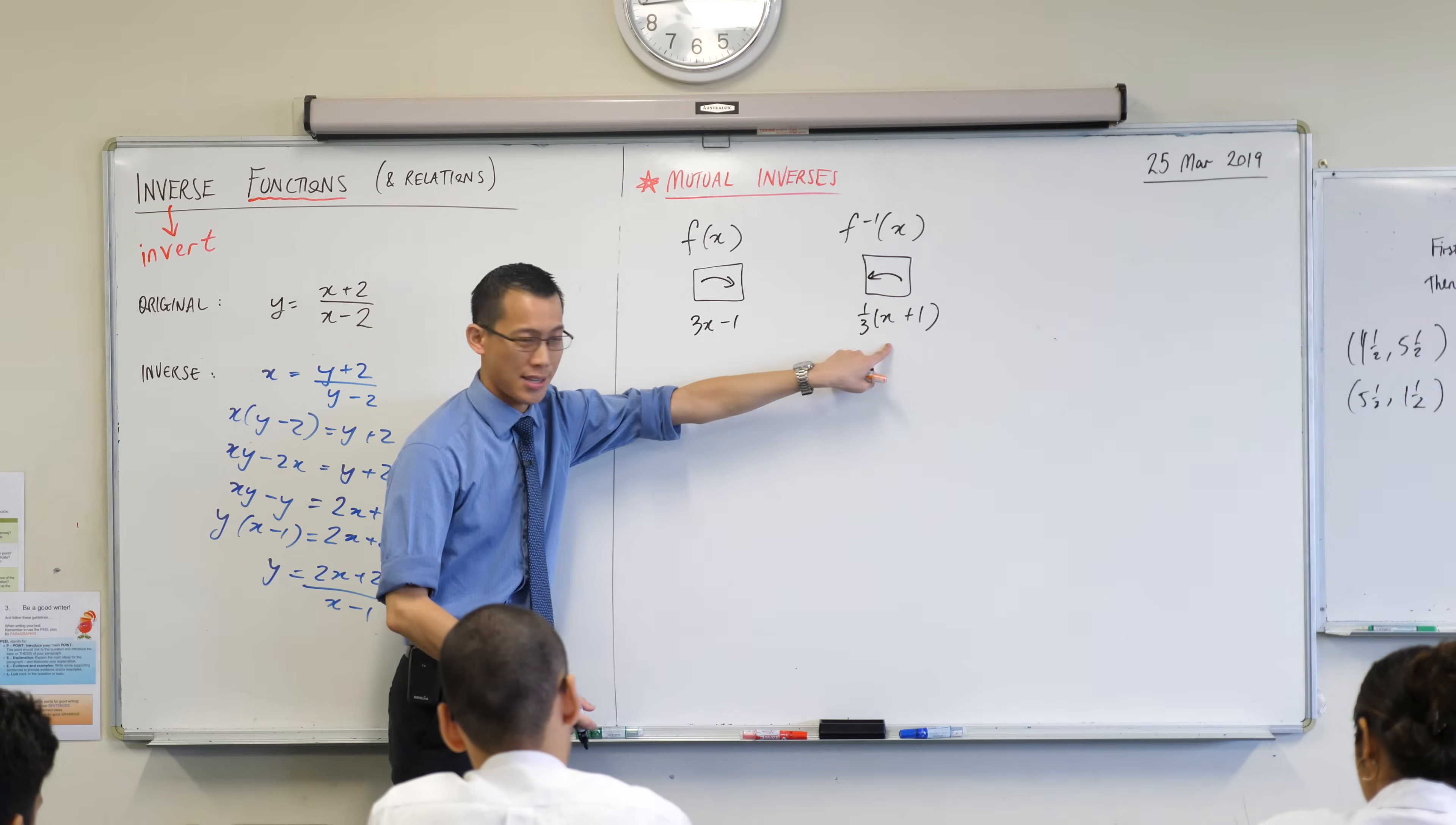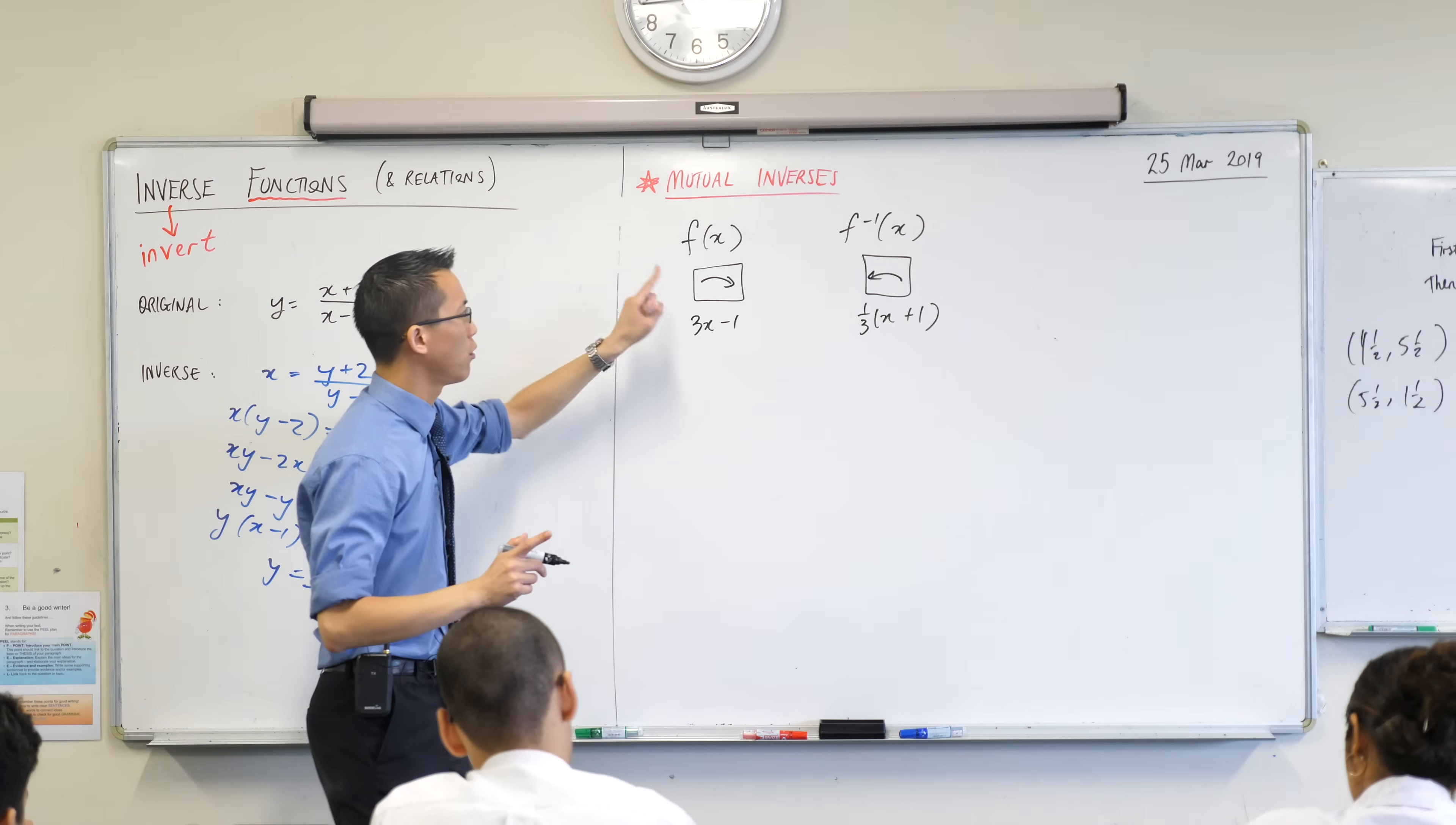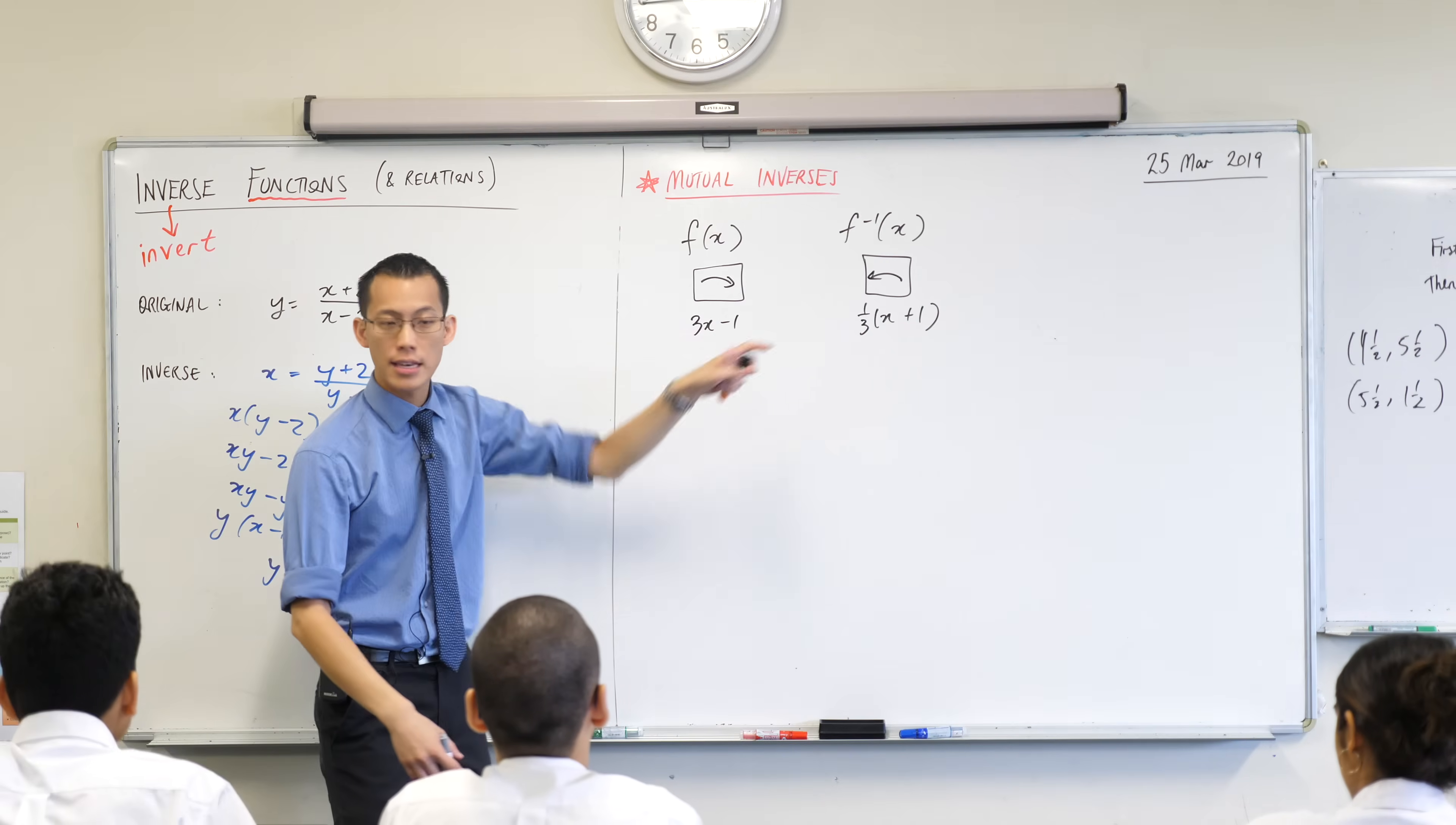And so because this undoes whatever it is that this does, something unusual happens when you put one function into the other. We call this composing, when you compose one function with another. And we'll take this as an example.